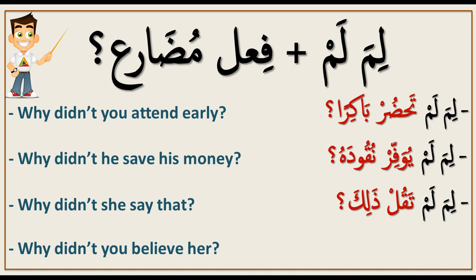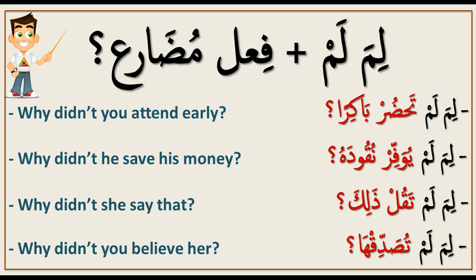'Why didn't you believe her?' Lima lam tusaddiqha. Tusaddiqha means 'you believe her.' So: Lima lam tusaddiqha — 'Why didn't you believe her?' Lima lam means 'why didn't,' and after it you add the present tense verb.